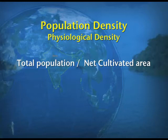The second type is physiological density. Pay attention to how this density is calculated and why it is called physiological density. This density is calculated by dividing the total population by the net cultivated area. Here, unlike arithmetical density, we do not take the total area — we take only the net cultivated area, which is the area cultivated for that particular year.